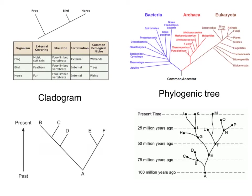We're going to be focusing on evidence of evolution and things that support the theory of evolution. Let's start by talking briefly about what a common ancestor is. The theory of evolution states that there is a common ancestor, that all forms of life can be traced back to this common ancestor.